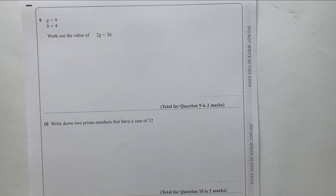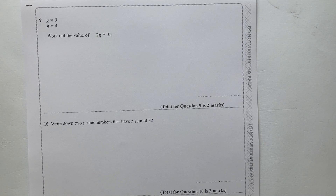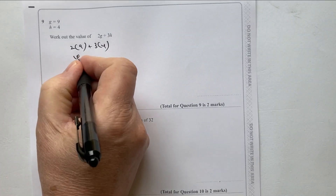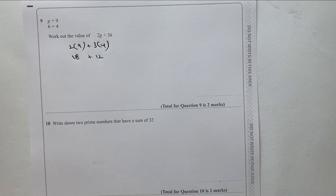We have the expression 2G + 3H, with G = 9 and H = 4. Substituting directly: 2 × 9 + 3 × 4. Two times nine is 18, and three times four is 12. Adding those together gives a total value of 30.